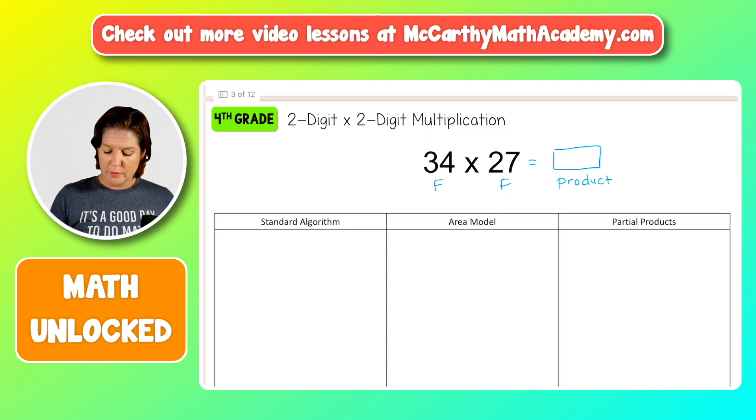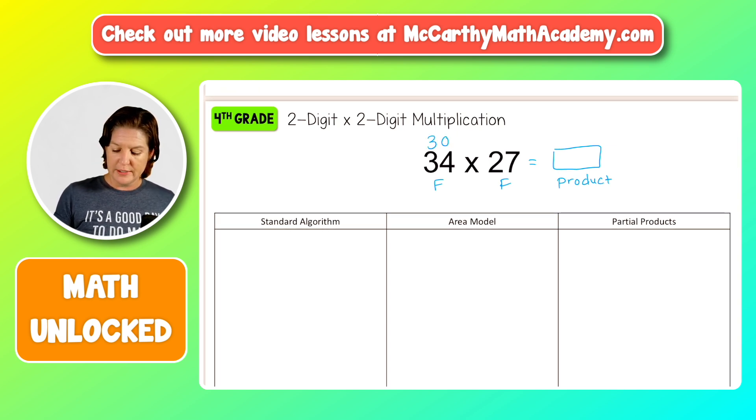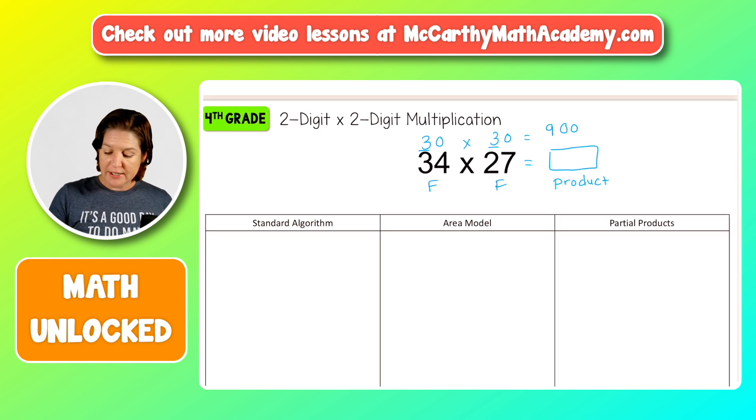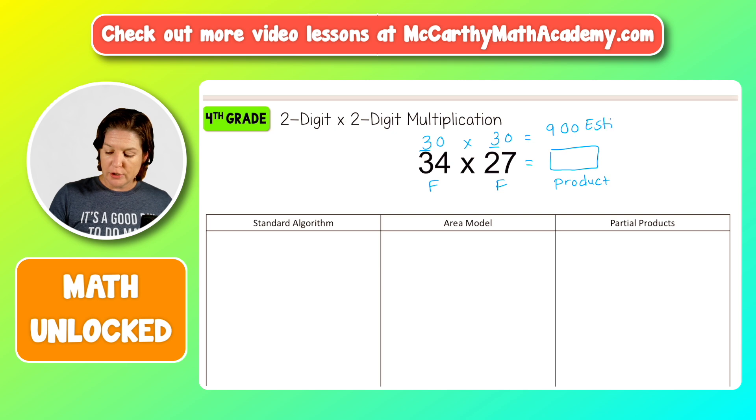So first step is estimation. So 34 would be between 30 and 40. It's closer to 30. 27 would be between 20 and 30. It's closer to 30. 3 times 3 is 9. So 30 times 30 is 900. So our product should be close to our estimation of 900.